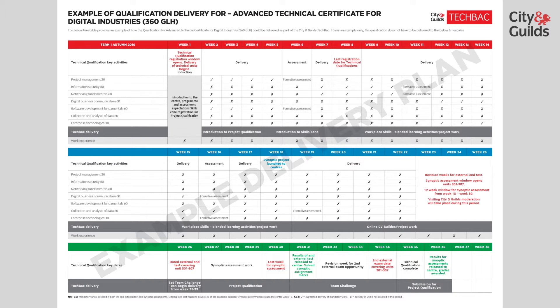Where learners have been unsuccessful in the test, there is a two-week revision period before the re-sit is available. Week 35 will see the completion of the programme and final extended project qualification submissions. City and Guilds will then release the final results with grades in week 36.